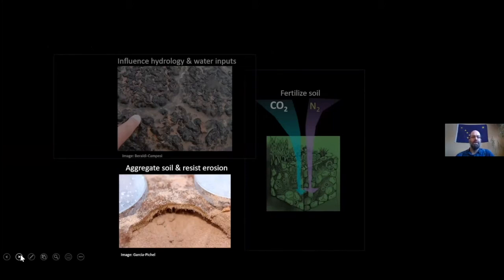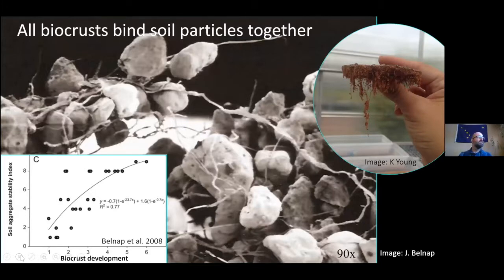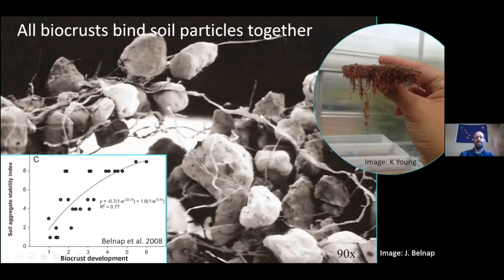I'd like to move on to aggregation of soil and resisting erosion. A general statement one can make is that all bio crusts bind soil particles together — it's kind of their signature move. They use stringy material that weaves throughout the soil and also sticky substances and charged surfaces to bind soil particles together, making a cohesive horizontal layer just on top of the soil. It's well documented that as bio crusts develop, the stability or strength of those clumps of soil held together gets stronger. The more bio crust development you get, the better erosion resistance you get.